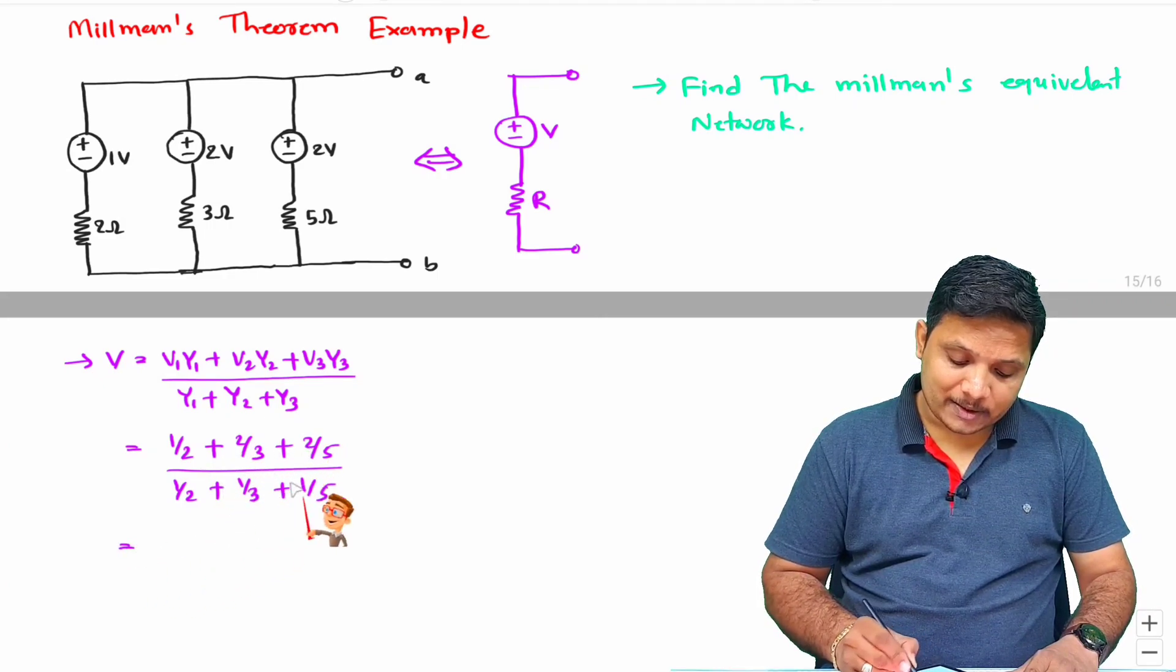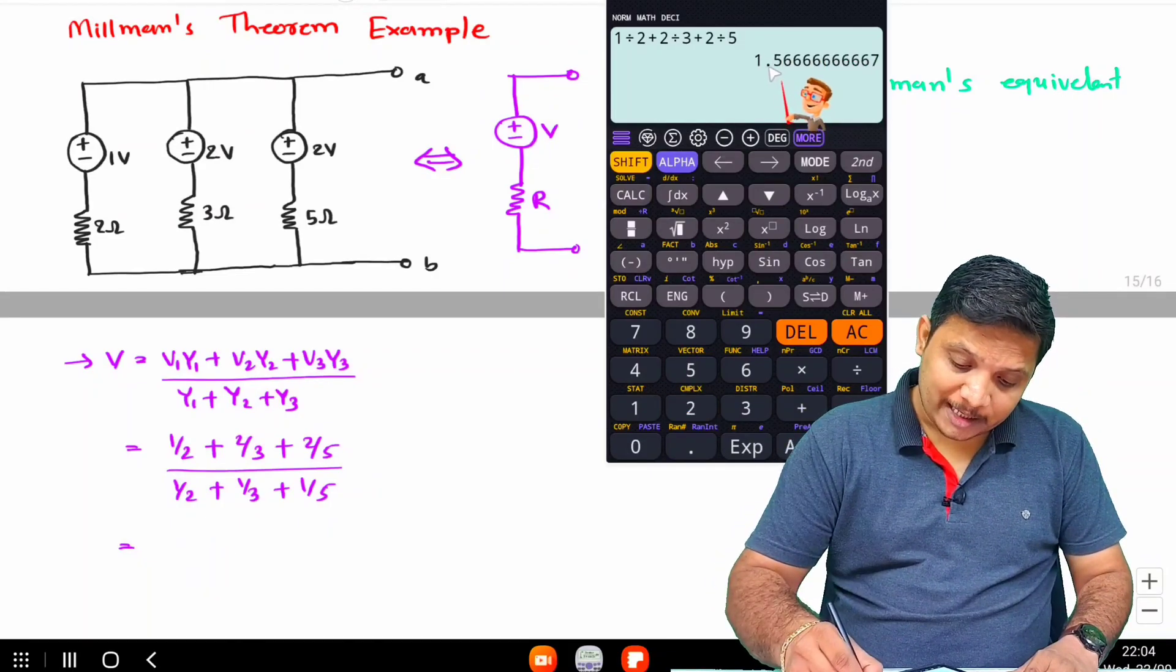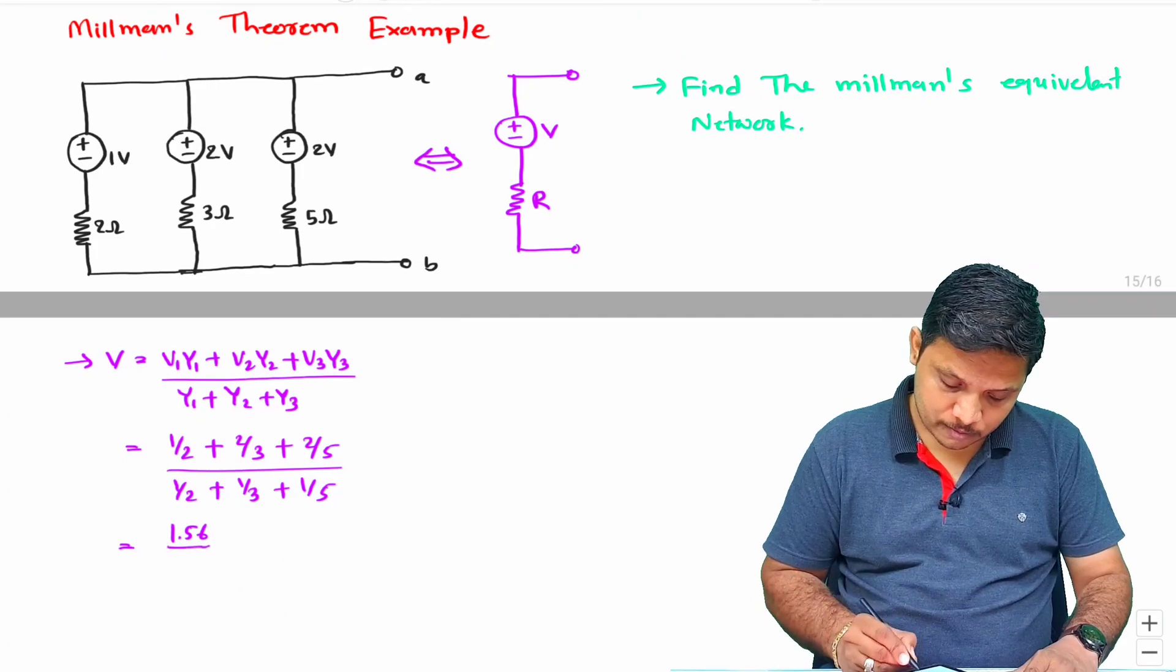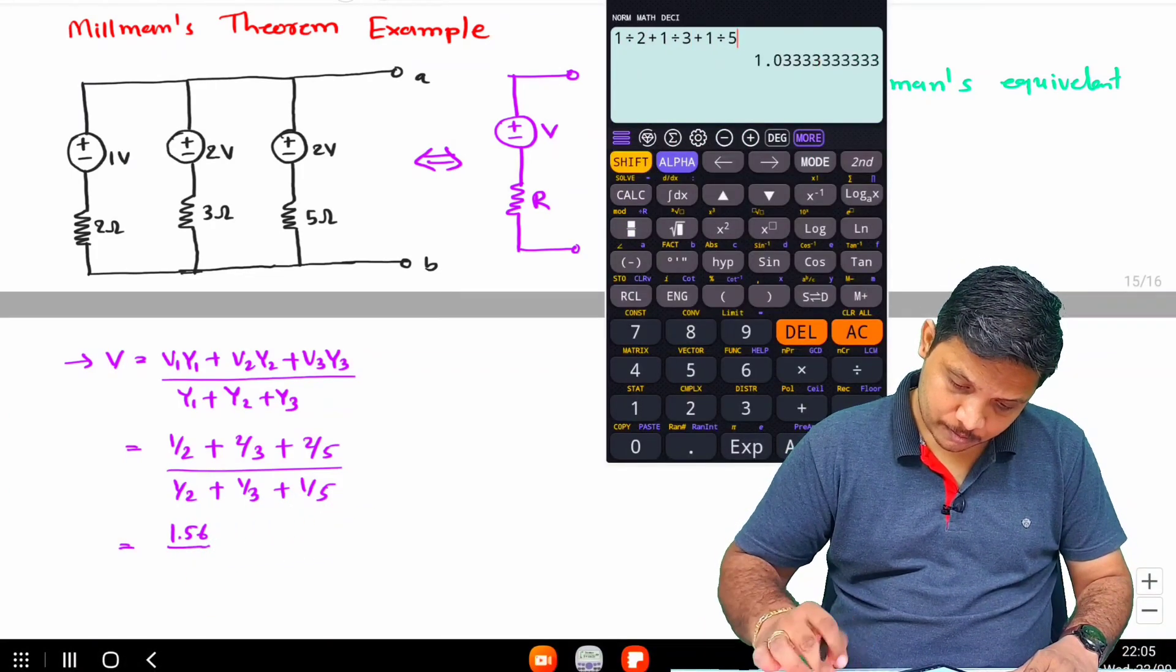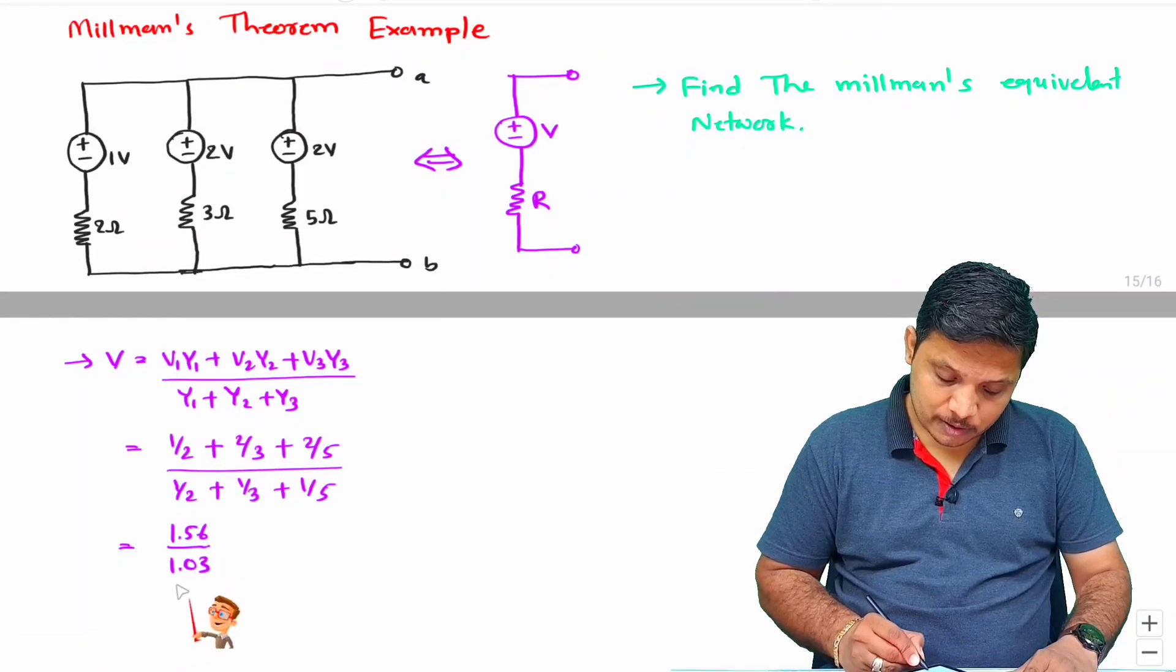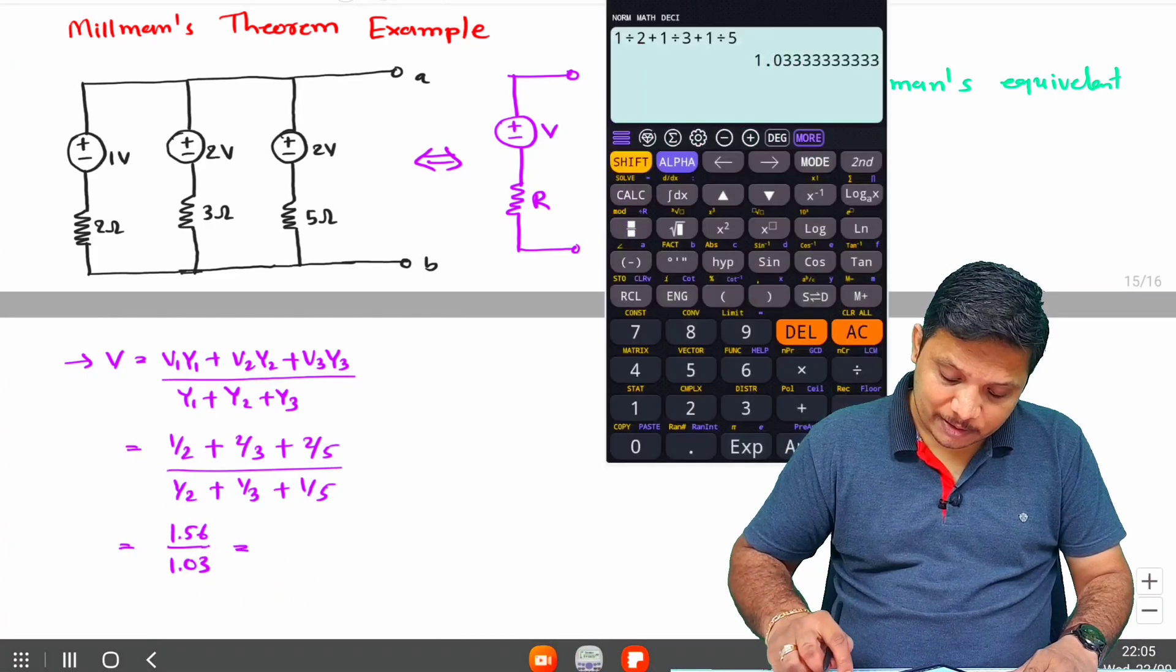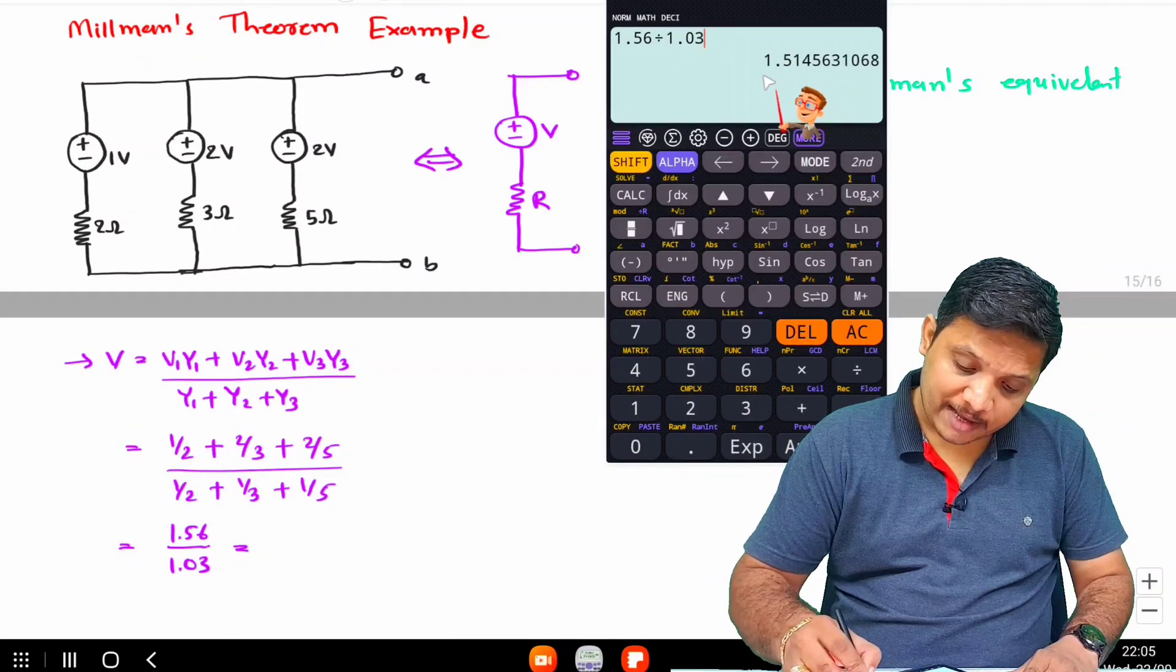Let us solve this. The numerator is 1.56 and the denominator is 1.03. So in total this voltage V equals 1.51 voltage.